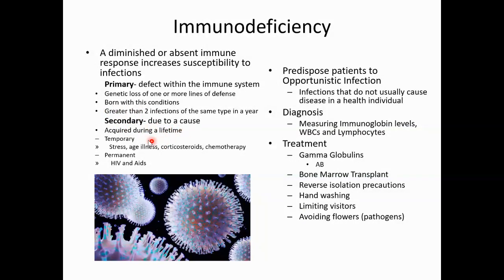Secondary immunodeficiency is due to something acquired during a lifetime — it may be temporary, caused by stress, age, illness, or medications that cause immunosuppression such as corticosteroids. Chemotherapy kills cancer cells and all other cells around it, including lymphocytes and blood cells. Or it could be an acquired permanent immunodeficiency, like HIV and AIDS.